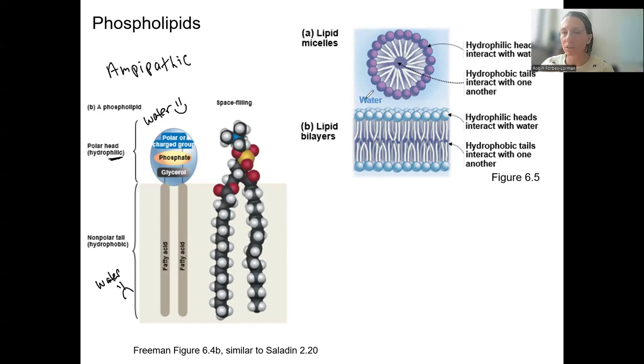So in order to be the most stable, these hydrophobic tails hide from the water. It's most stable if they're away from water. Lipid micelles are when there's a single tail, our phospholipids in our bodies have two tails. So this bilayer is what forms when we have these phospholipids.